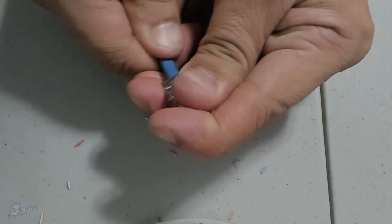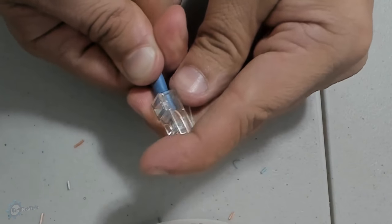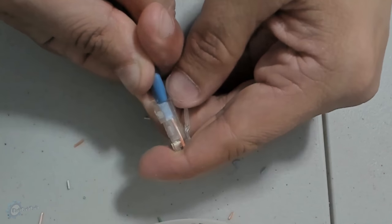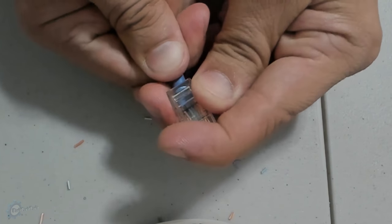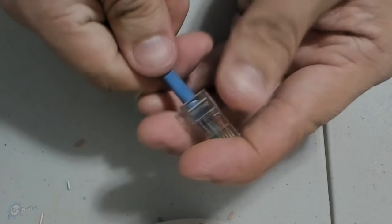Try your best to get all the wires into the connector without them switching places. It's a good idea to inspect the wires through the clear connector before you crimp to not waste a connector.